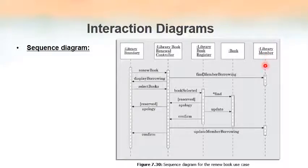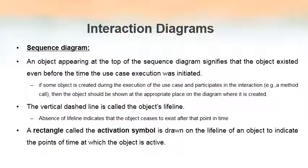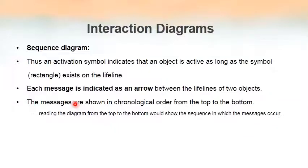We have to start from the first message of the diagram and go toward the bottom one by one — that is how we read a sequence diagram. The slides explain each term: what the rectangle symbol represents, what the vertical dashed line means, what the object box represents, how messages are indicated, and that messages are shown in chronological order — the order in which they occur.